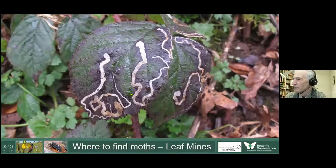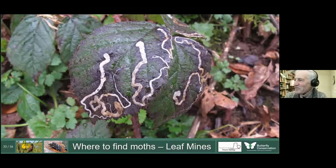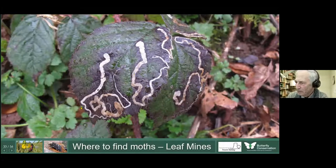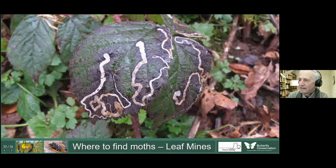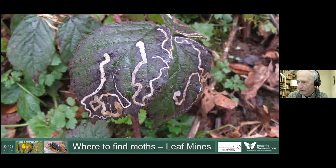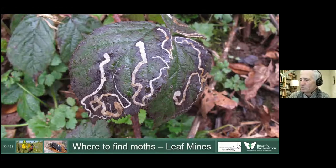Then we've got moths which aren't easily visible — the leaf miners. These are traces of where the moth caterpillar has been, and we can identify the species from the shape of the wiggly line, which is the mine where the caterpillar spent its life. It lays an egg, and as it gets bigger the mine gets wider, eventually emerging at the end. The shape of the mine and the plant it's on can help identify the leaf-mining moth — you don't even need to see the adult.